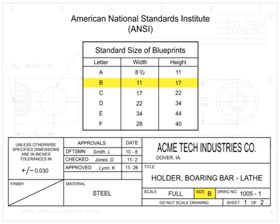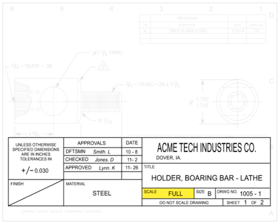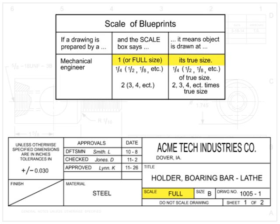The farther in the alphabet the letter, the larger the drawing size. The scale block indicates the size and scale of the drawing. Some items, such as large machines or buildings, are simply too large to be drawn life-size or to scale. Drafters have the choice of drawing things to scale, larger, or smaller than the actual item. The first number on the scale corresponds to the size on the print; the second number is the size of the part. One-to-one indicates full scale, one-to-two indicates the drawing is one-half the size of the actual part, and two-to-one indicates the drawing is twice the size of the actual part.